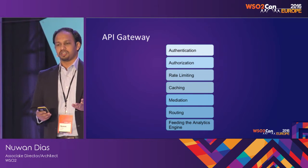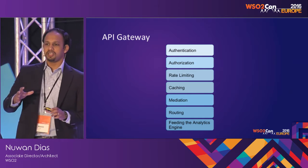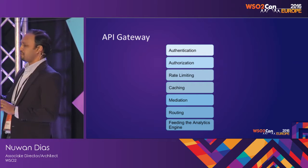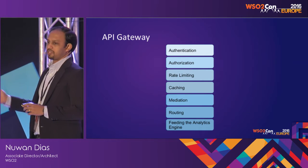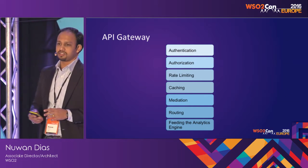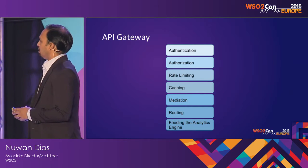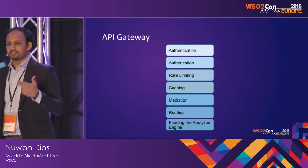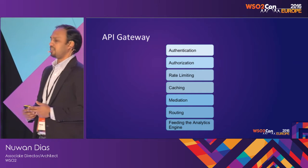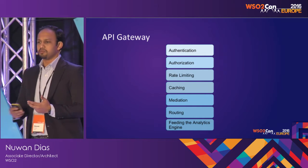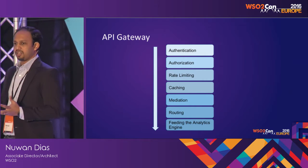What we've seen with most customers is that when adopting an API management platform, they usually start small with a few APIs, and an API gateway is sufficient in most cases. There is a difference between an API gateway and an API platform. A typical API gateway offers authentication and authorization, rate limiting, caching so that requests don't all go to the backend, advanced mediation, transformation, routing, and feeding data into an analytics engine. Most gateways support these functionalities.